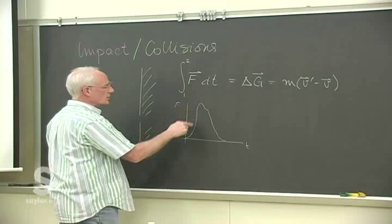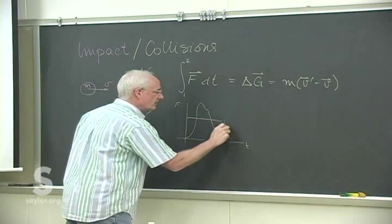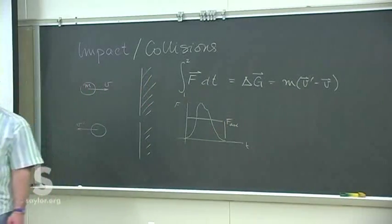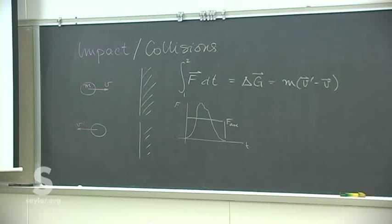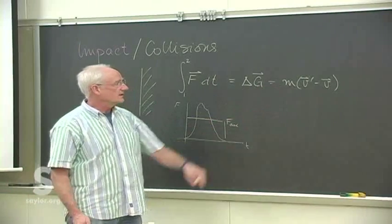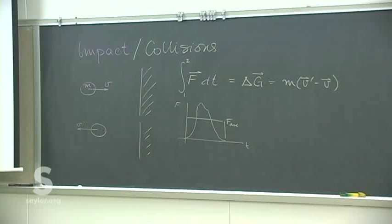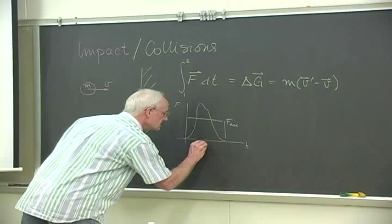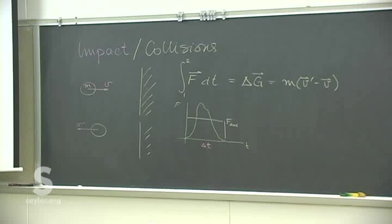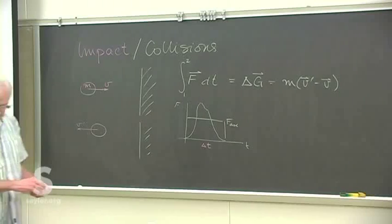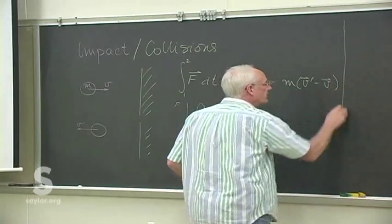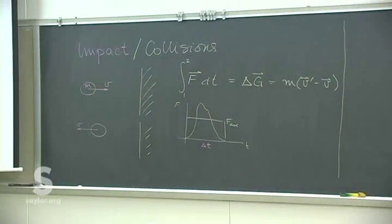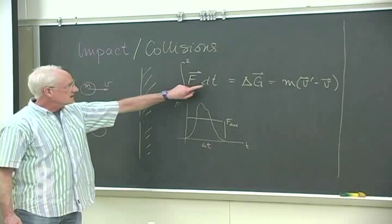What we'll usually do is not look at the peak force or the entire integral, but use an average force to represent it. However, it's tough to know what those forces are — there's no way to calculate them directly. We can calculate what the average force is because we can figure out the change in velocity, if we have some idea of what the time period is. Since these forces and times are difficult to know, we'll be done with them shortly.